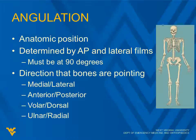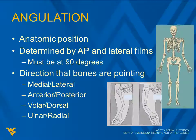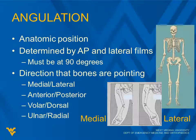Descriptors are going to be medial and lateral, anterior, posterior, volar, dorsal, ulnar, radial — there are others. So, the one on the left — would that be medial or lateral angulation? And the one on the right is going to be the opposite. If we look at the one on the left, if it were an arrow, it would be pointing toward the medial portion of the body. So that's a medially angulated fracture, as opposed to the other side — a laterally angulated fracture.